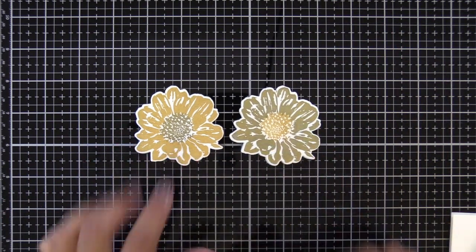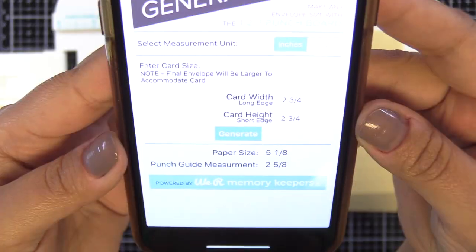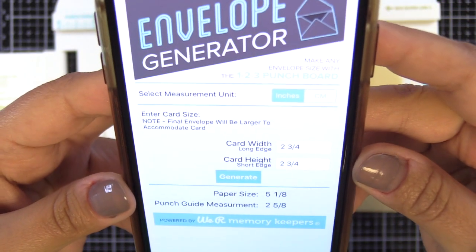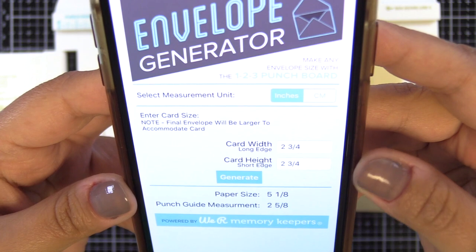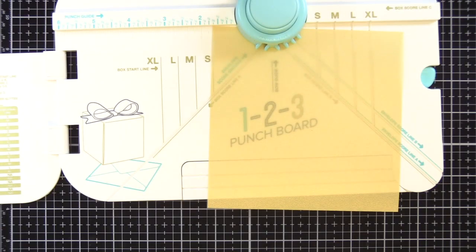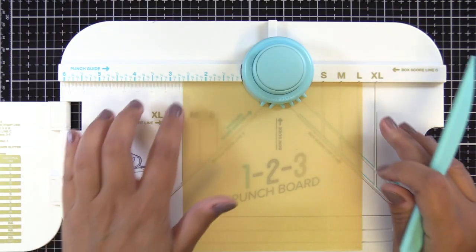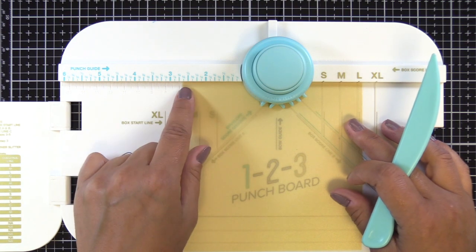Now in order to make the envelopes I have the envelope generator app from We Are Memory Keepers because my little mini cards are not a size that is on the grid information that you have on the punch board over to the left here.